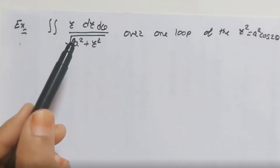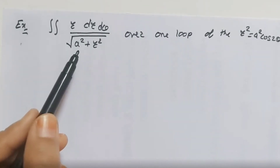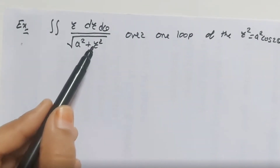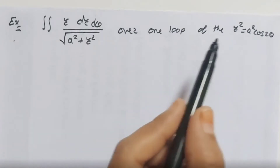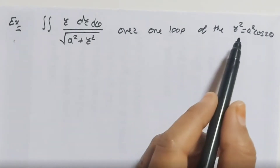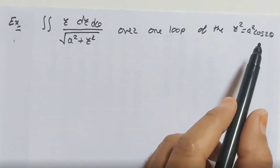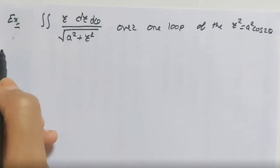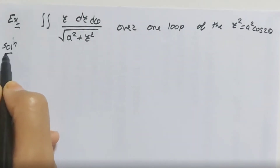We have to solve the double integral where the function is r divided by the square root of a squared plus r squared, drdθ, over one loop of the curve r squared equals a squared cos 2θ.